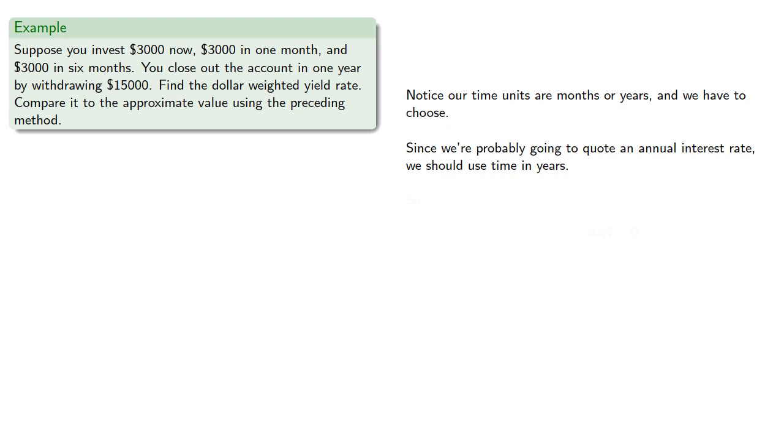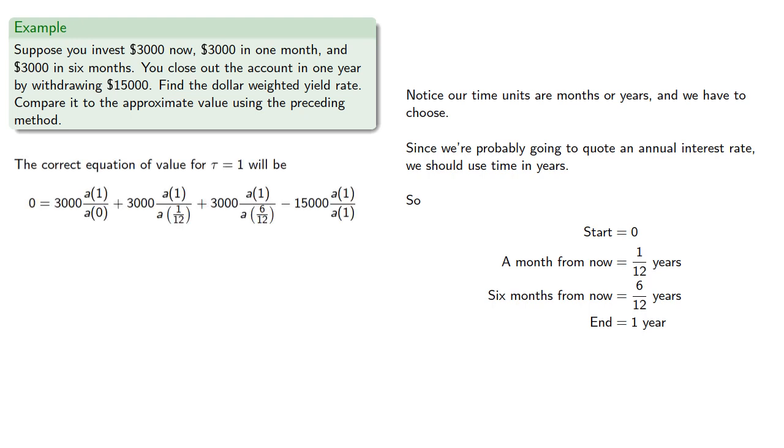So remember, we'll want the start to be zero and the end to be one year. And that means a month from now, or six months from now, will be... And so the correct equation of value for tau equal to one will be...